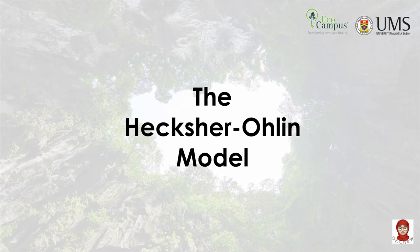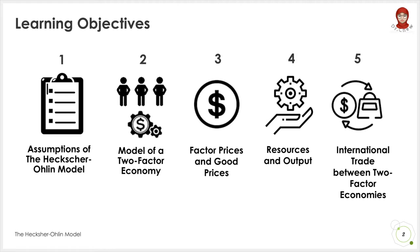Hi guys! Today's lesson is about the Heckscher-Ohlin model. There are five learning objectives for this lesson. By the end of this lesson, you should be able to: explain the assumptions of the Heckscher-Ohlin model; discuss the model of a two-factor economy; explain the choice in the use of inputs due to factor prices and good prices; discuss how changes in resources affect the allocation of factors across sectors and the associated changes in output produced; and outline the production structure of a two-factor economy and what happens when two economies, home and foreign, trade with each other.